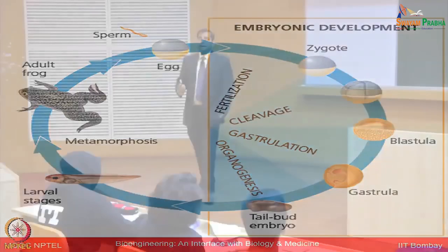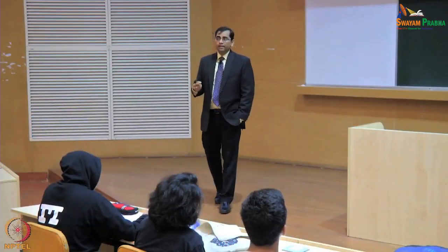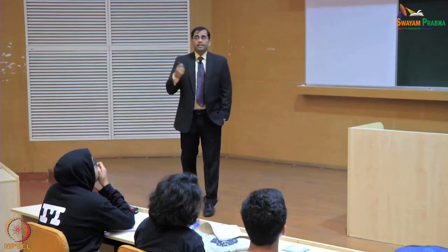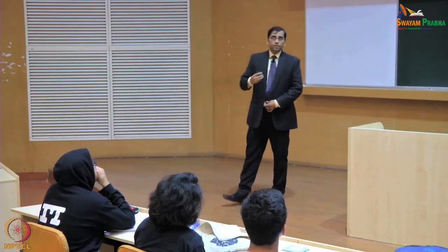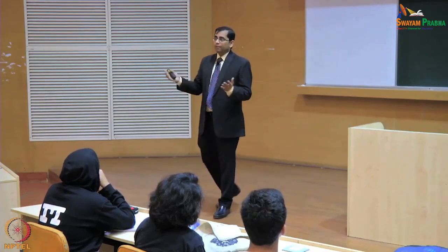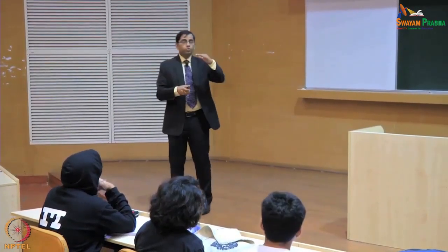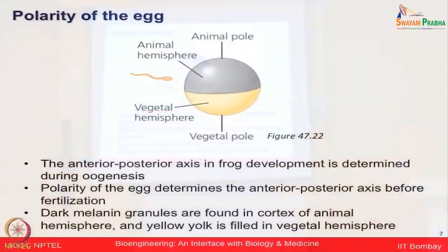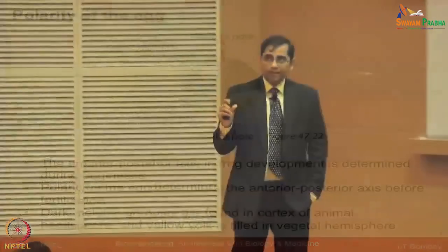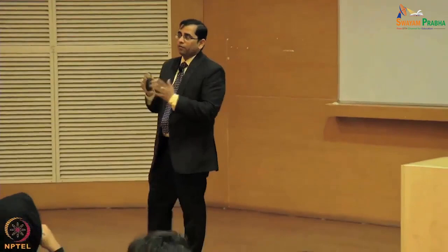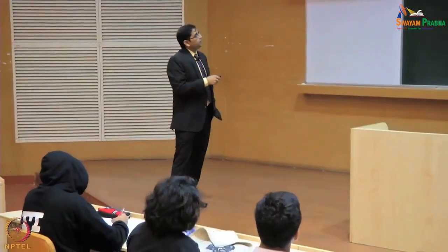Let us think about the egg. There are factors that dictate the polarity of the egg. One pole is known as the animal pole and the second is the vegetal pole. These are not random — their fate is decided quite early, even during oogenesis. The animal pole is rich in dark melanin granules, while the vegetal pole is rich in yolk. These orient the cell along an anterior-posterior axis for subsequent divisions.